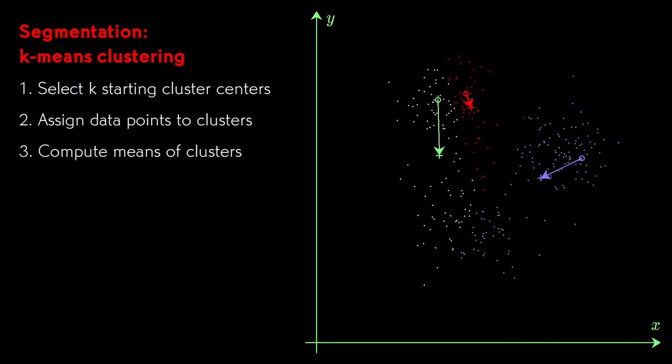For each cluster, calculate the mean or centroid of all the points in it. Since there were k clusters, we calculate k-means, which is where the procedure gets its name.